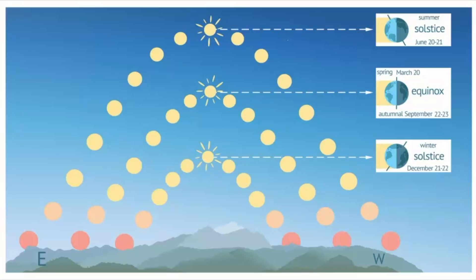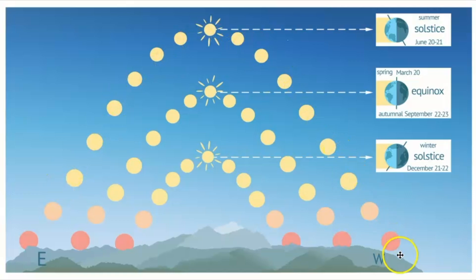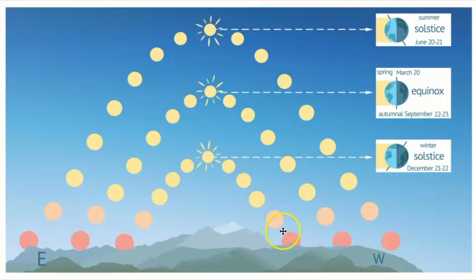As we take a look at the path of the sun through the sky, we notice that on the equinox we have equal day and night. But at the summer solstice the sun rises to the highest point in the sky, which gives us the longest day of the year. The opposite of this would be the winter solstice, when the sun hits the lowest point in the sky and we have the shortest days of the year.